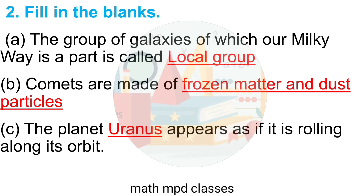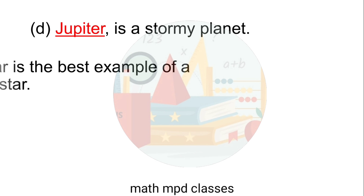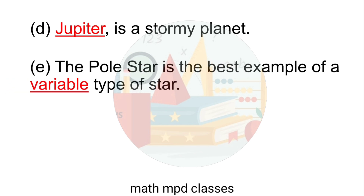C. The planet blank appears as if it is rolling along its orbit — Answer: Uranus. D. Blank is a stormy planet — Answer: Jupiter. E. The Pole Star is the best example of a blank type of star — Answer: Variable.